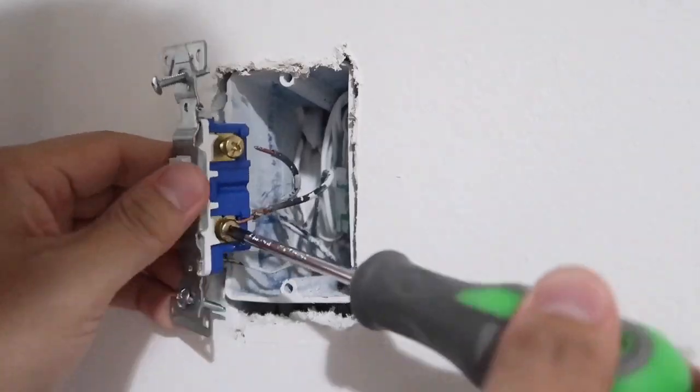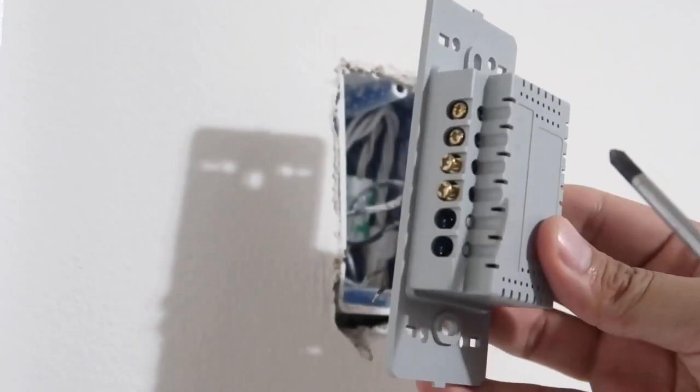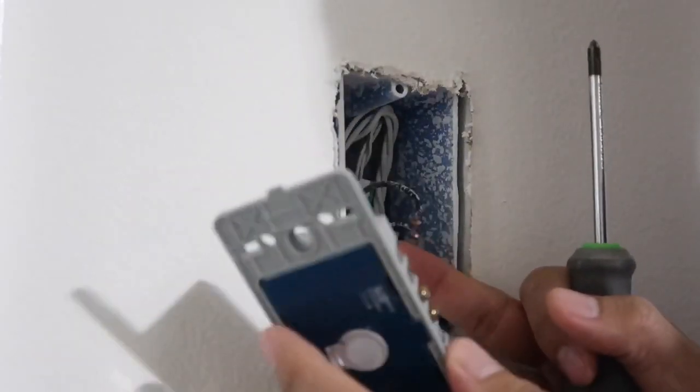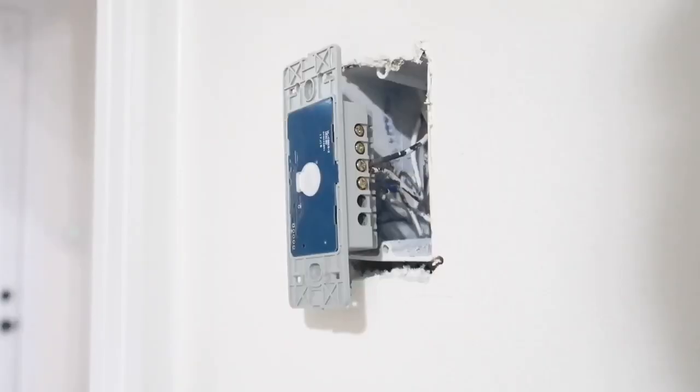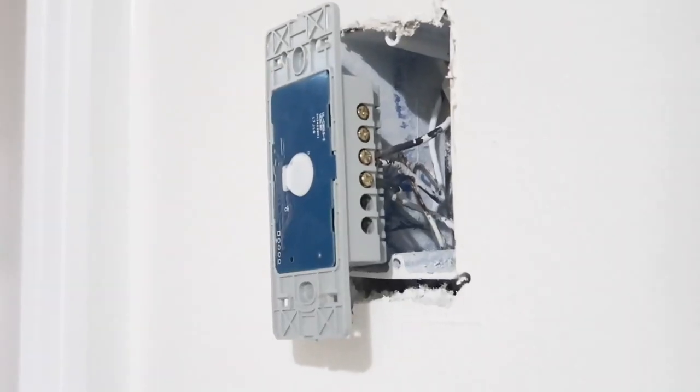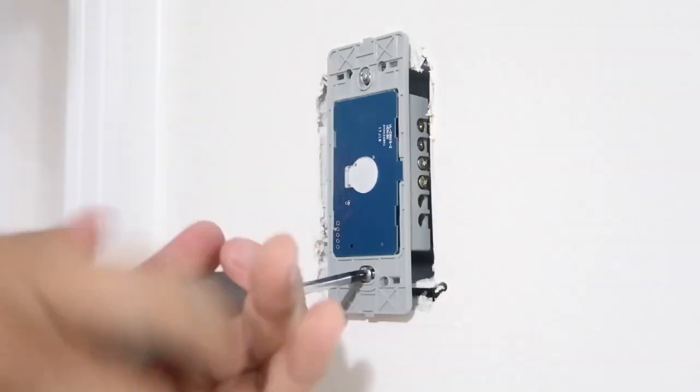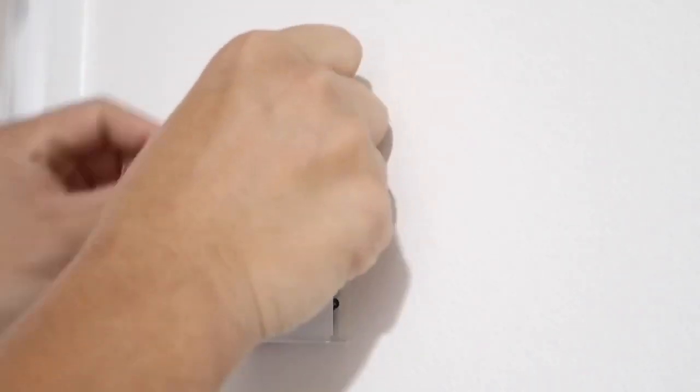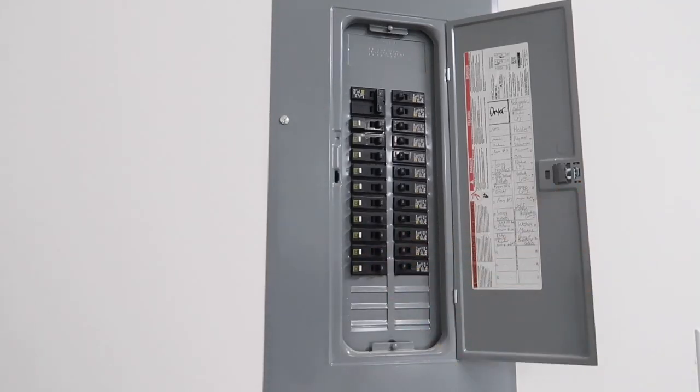Again, the only screws we are going to work with is the line in right here and the line out. So simply put the line out wire in this hole, tighten the screw. Then if you have two line ins like me, put both wires into the line in hole and tighten the screw. Make sure everything is snug and tight and that no wires are touching each other. Screw in our two screws and pop in our tempered glass panel. Now we can actually head back to the circuit breaker box and turn it back on so we can test our new light switch.